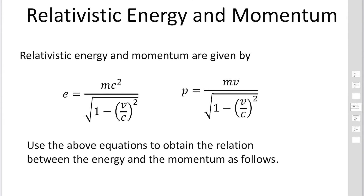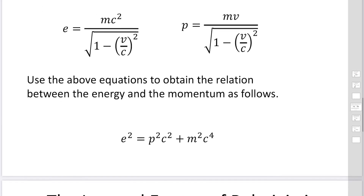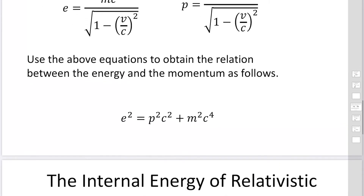Next, we take into account the relativistic effect. The relativistic energy and momentum are expressed as E = mc² / √(1 − v²/c²) and momentum p = mv / √(1 − v²/c²). Using these equations, we can derive another expression: E squared equals p squared c squared plus m squared c to the fourth.